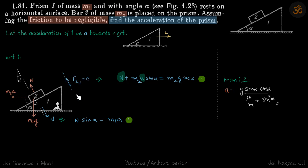For prism 1, the only force in horizontal direction is the normal reaction. We can write N sine alpha equals M1 into a. So towards right, the force N sine alpha equals M1 into a.